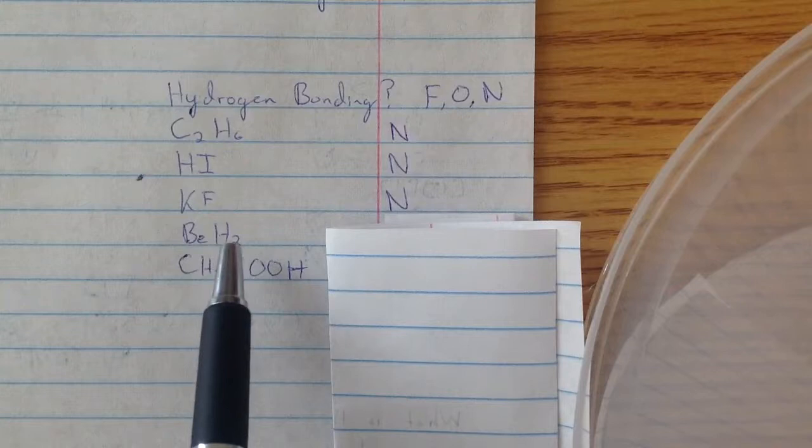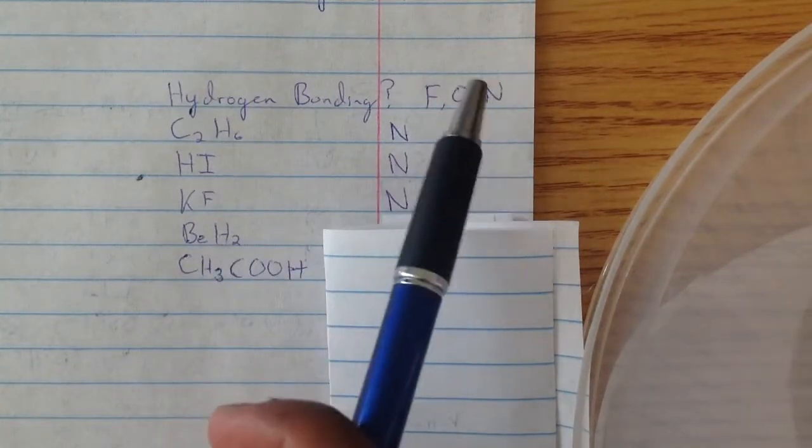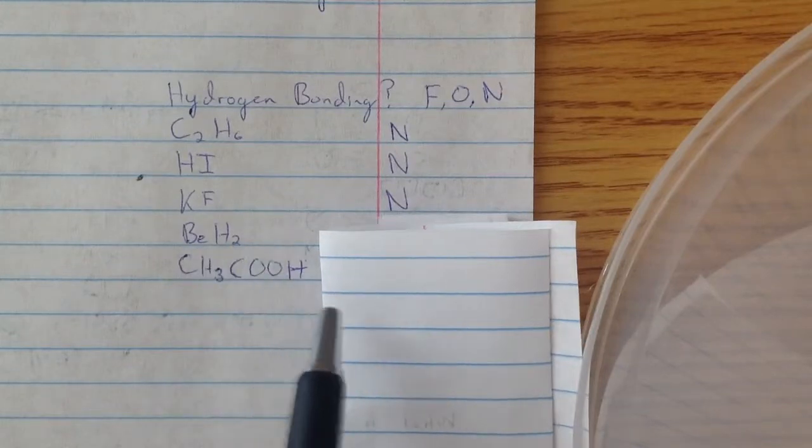And then, BeH2. Okay, so it has hydrogen, at least. Does it have these three? No, it doesn't. It doesn't have F, O, or N.